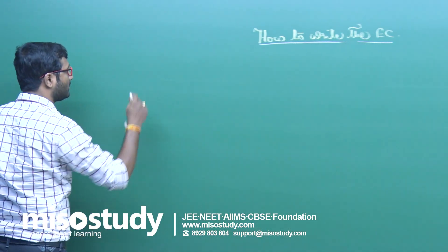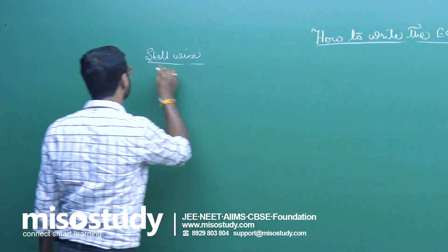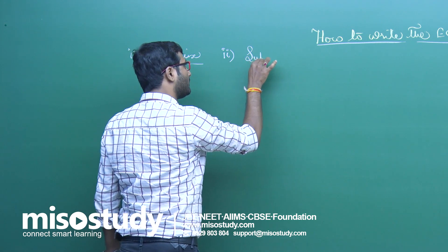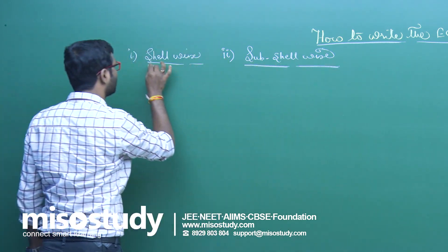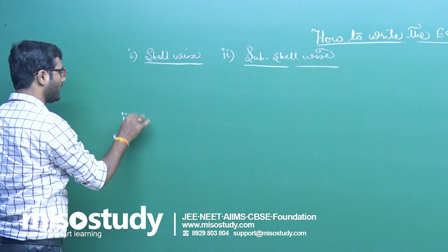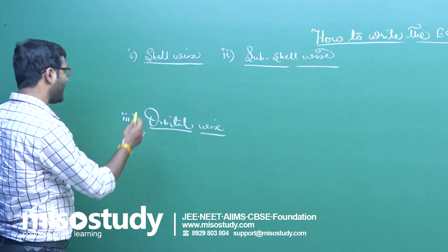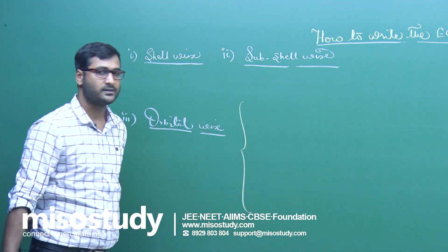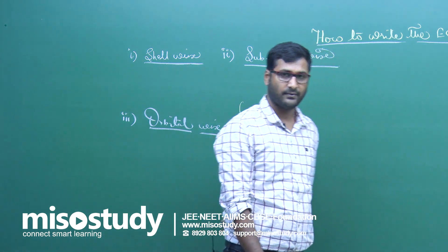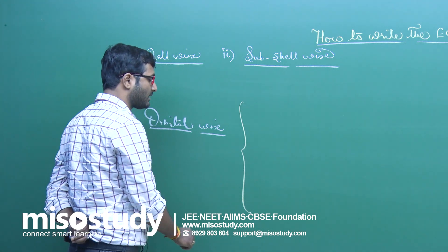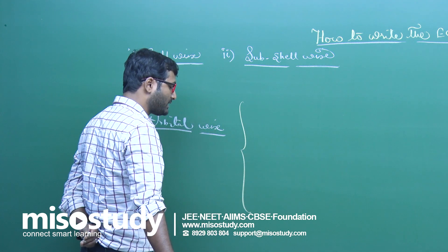Let us start the topic. How to write the electronic configuration (EC). First of all, the first method is cell-wise, the second one is sub-cell wise, and the third one is orbital-wise. I am discussing the Aufbau principle: the electron will enter the sub-cell which has the lowest energy.